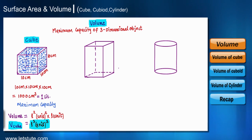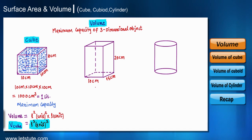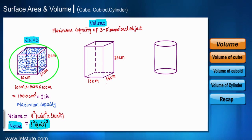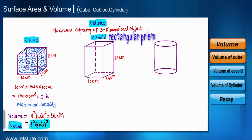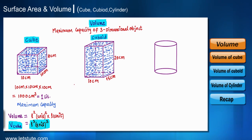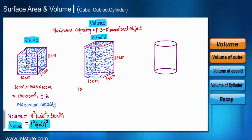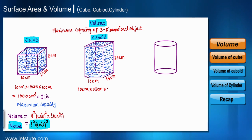Let's pour water into the second container, which has a length of 10 centimeter, width 15 centimeter, and height 20 centimeter. Since all dimensions are different, this shape is called a cuboid — many call it a rectangular prism. The total water poured is the area of the base, 10 centimeter into 15 centimeter, multiplied by the height of 20 centimeter, giving us 3000 centimeter cube.